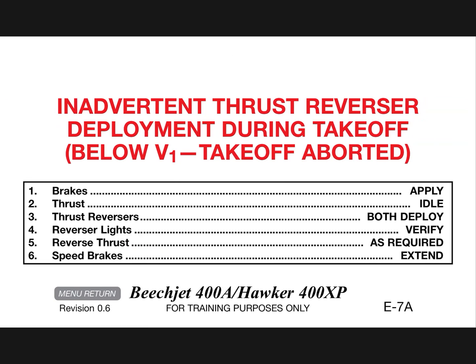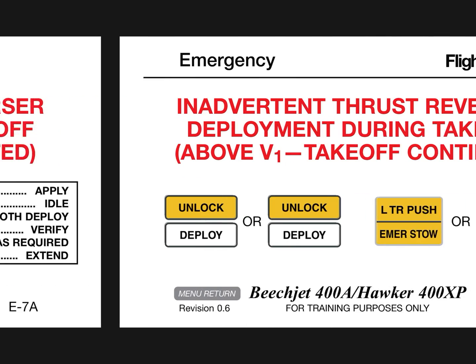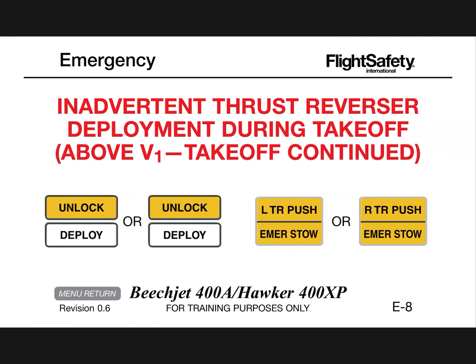Inadvertent thrust reverser deployment during takeoff below V1: takeoff aborted, brakes apply, thrust idle, thrust reversers both deploy, reverse lights verify reverse thrust as required, speed brakes extend.